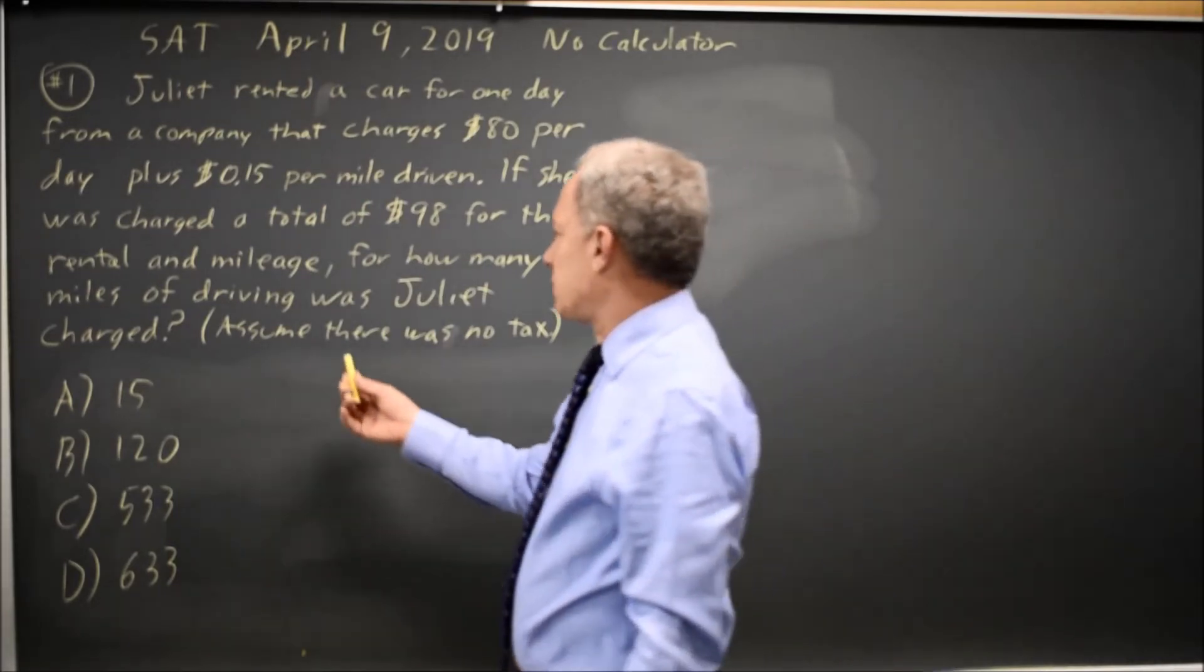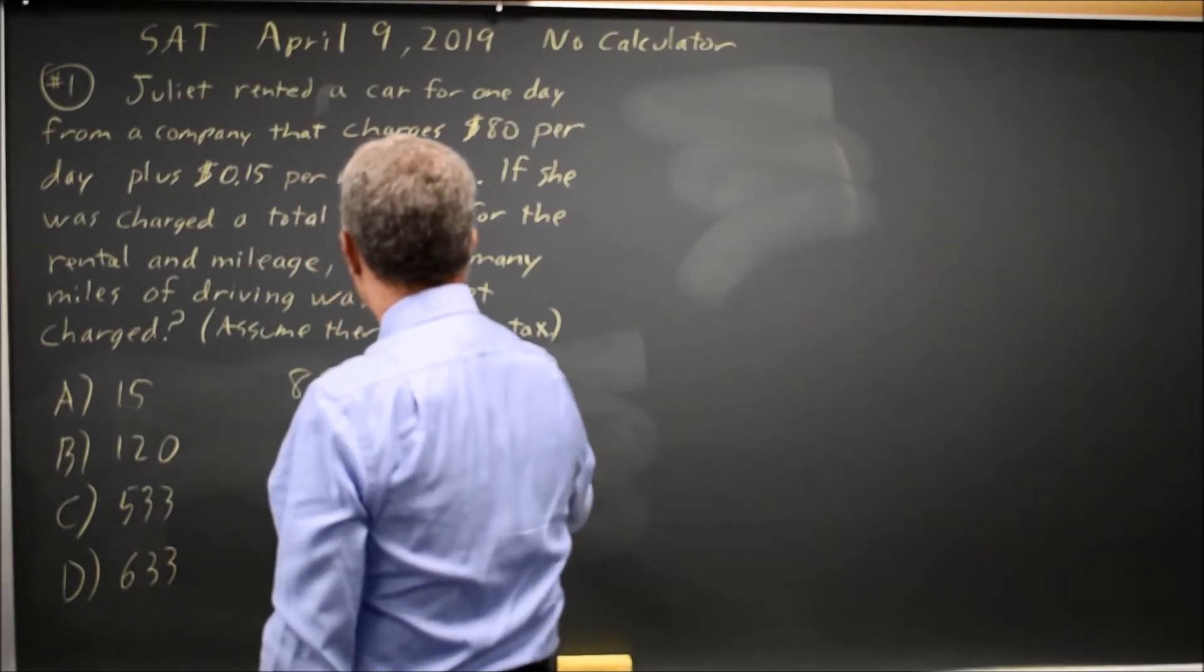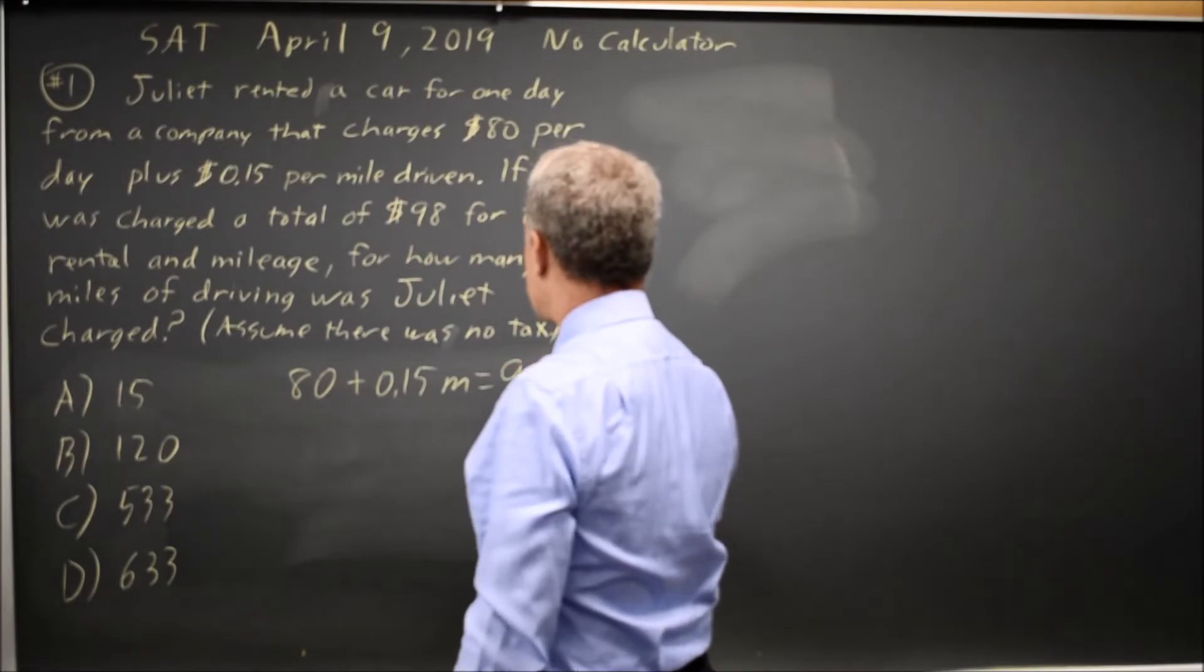This requires us to set up a linear equation. 80 plus 0.15 times the number of miles equals the total rental cost of 98.